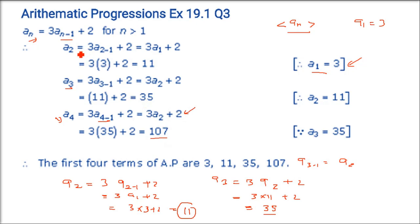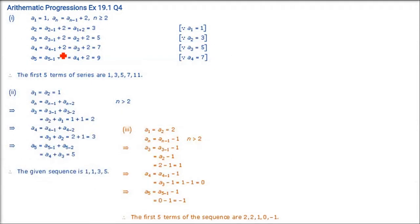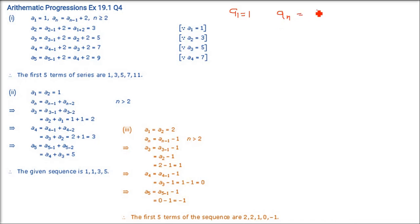This is how recursive sequences work — you have to find the previous term to find the next. Now this is also an NCERT question. Let aₙ be a sequence. Write the first 5 terms. The first part: a₁ = 1, and for n ≥ 2, aₙ = aₙ₋₁ + 2.